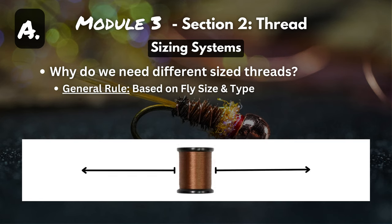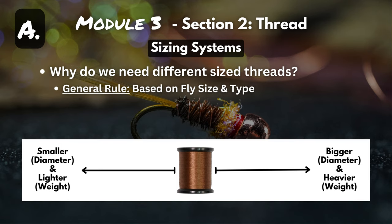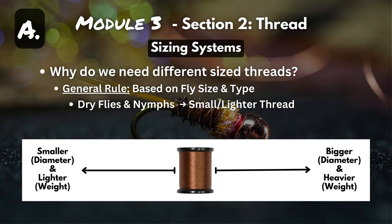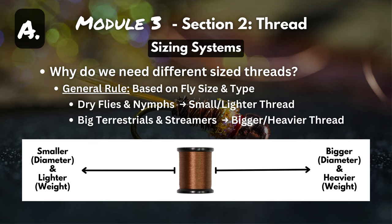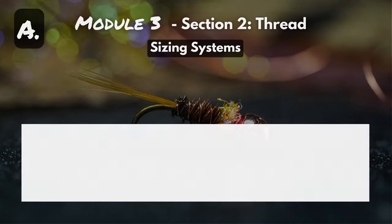On one end of the spectrum you have smaller diameter and lighter weight thread, and on the other you have bigger diameter and heavier weighted thread. So if you wanted to tie some dry flies or nymphs, you're going to be on the smaller end of the spectrum. Or if you wanted to tie up some big terrestrials or articulated streamers, you're going to be on that heavier, bigger end. That's where the sizing systems come into play — and there are two different ones.